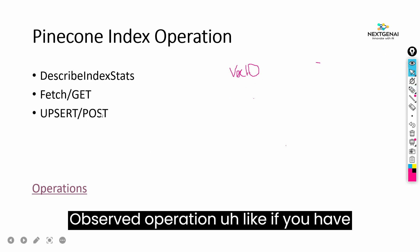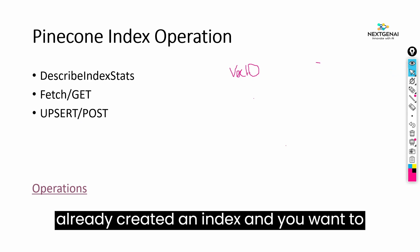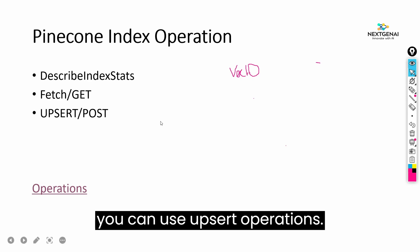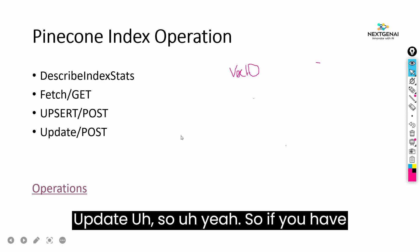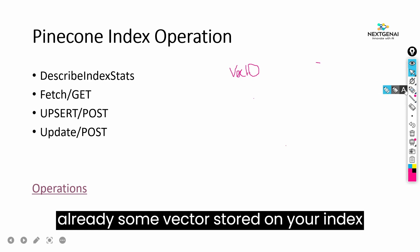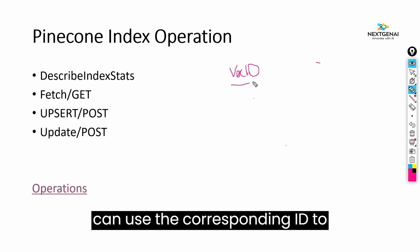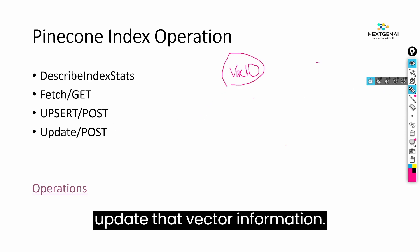The upsert operation: if you have already created an index and you want to store more vectors inside it, you can use upsert. For the update operation: if you have a vector already stored in your index and you want to update it, you can use the corresponding vector ID to update that vector's information.